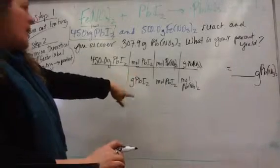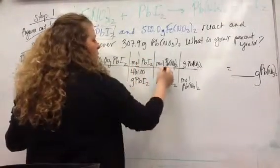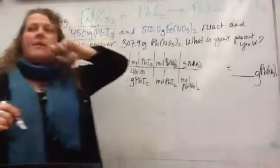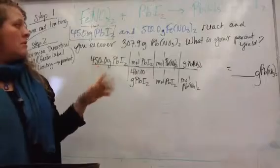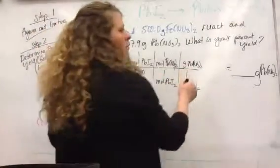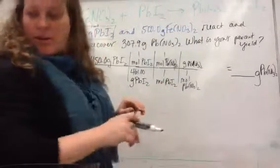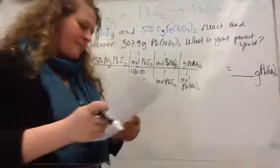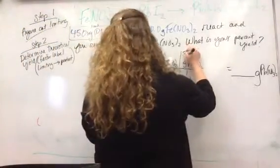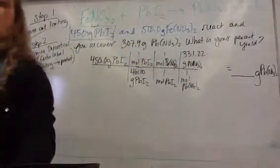So grams of lead-2 iodide, this is 461.0 per mol. One to one mol ratio, we get that from the coefficients in the balanced chemical equation. And then molar mass of lead nitrate. Oh, I don't have that one, do I? I've got it on my paper. 331.22 grams of lead nitrate. Okay, get me a number.